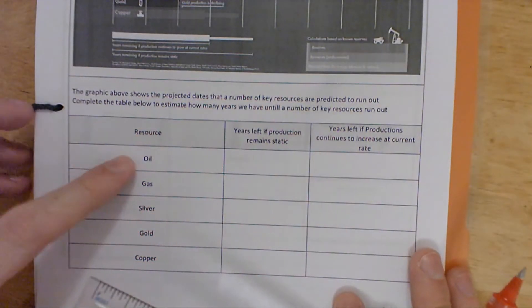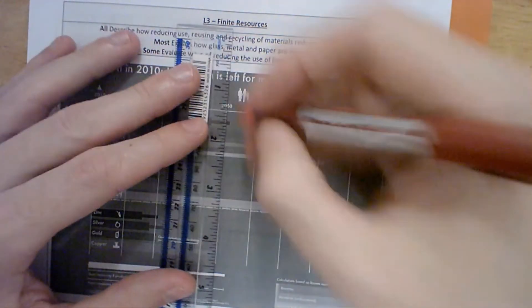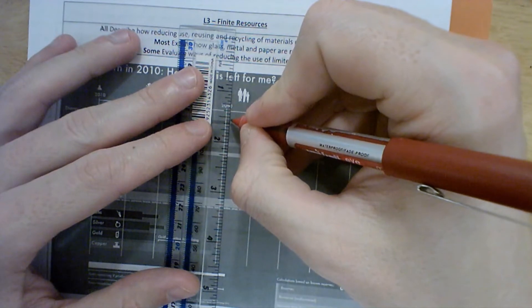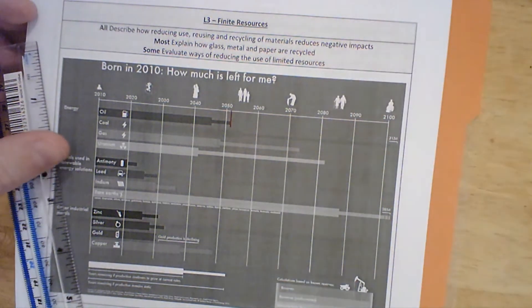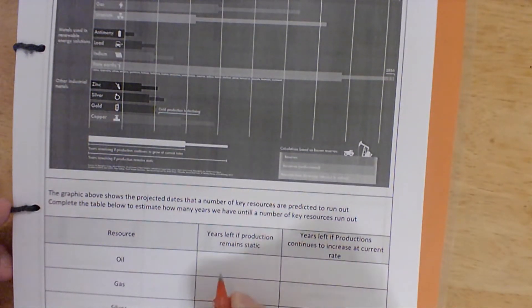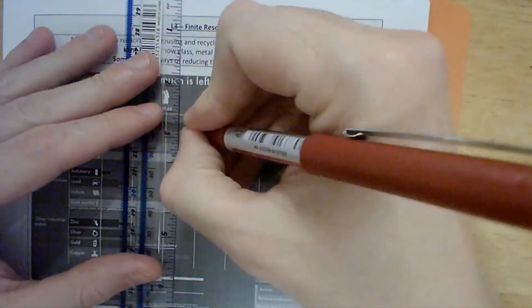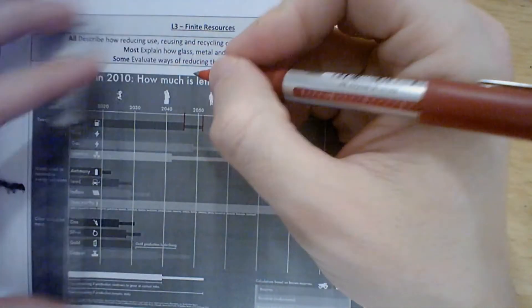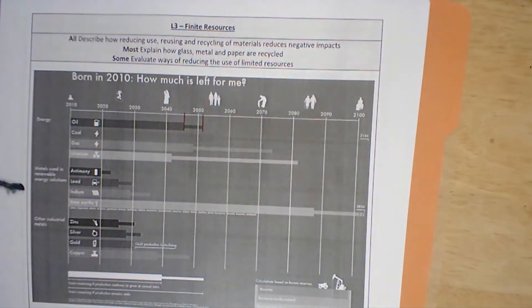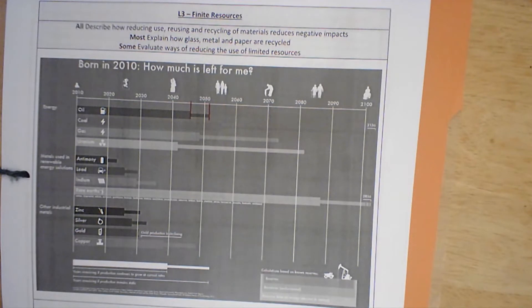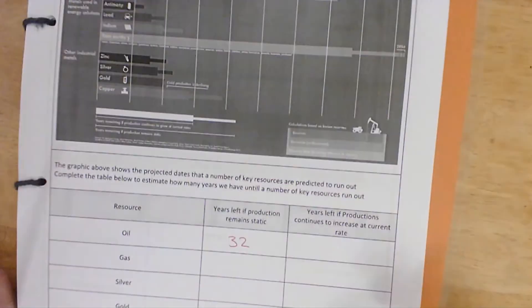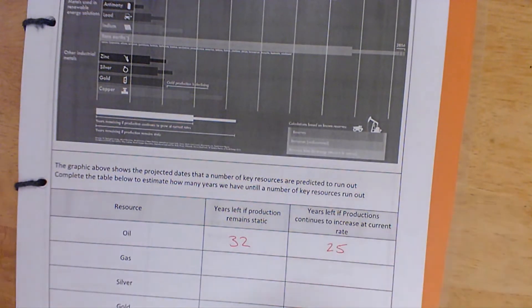For crude oil: if production remains static, that looks to me at about 2052, which would give us 32 years left. If it continues to increase, it will run out a little bit sooner — I'll say 2045, so that's going to give us approximately 25 years before crude oil runs out if we continue to consume it at the current rate.